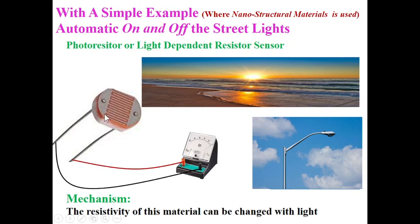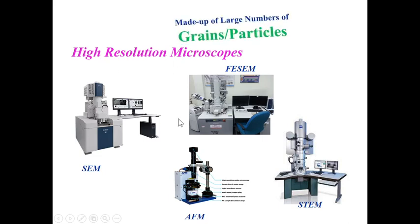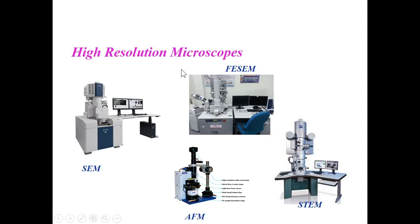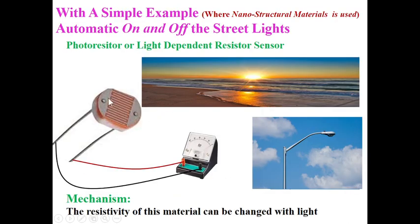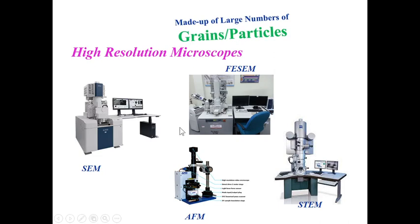Whenever this material is viewed with high resolution microscopes, we can find that it is made up of a large number of grains. Based on the grain size, its sensitivity will increase or decrease. When this copper wire is viewed with high resolution microscopes, we can find that the material is made up of large numbers of grains or particles. These instruments help us determine the grain size of any sensing or smart material.